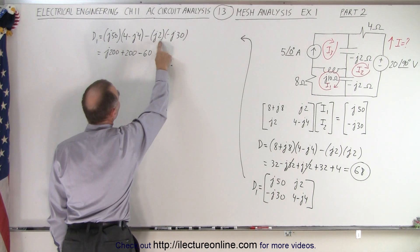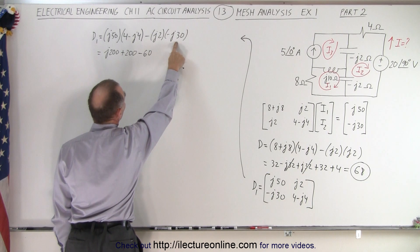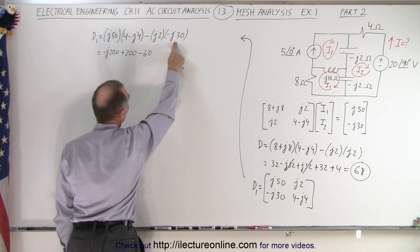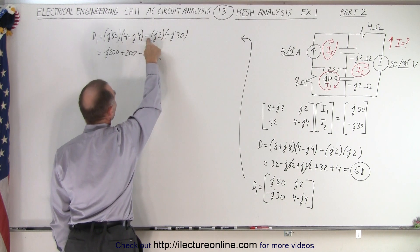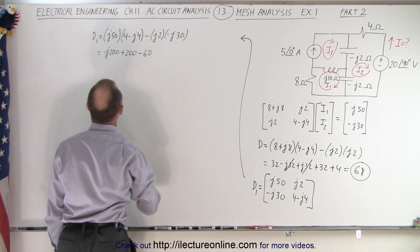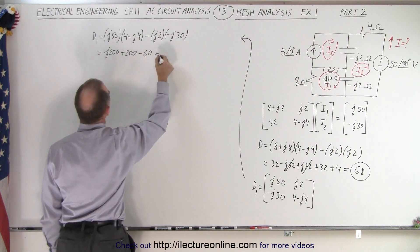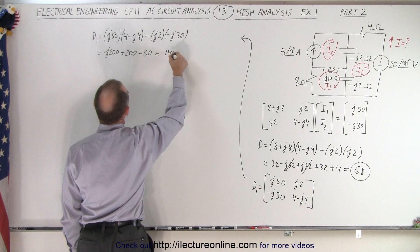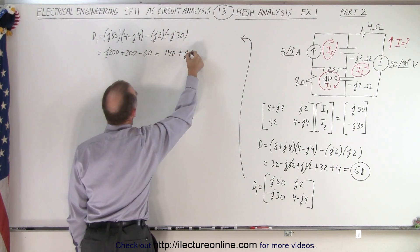So we have a j2 times a j30, that's a j squared 60. j squared is negative 1, times negative is positive, times 1, negative is negative again. So that means that we end up with 140 plus j200.